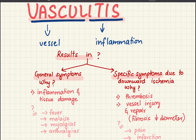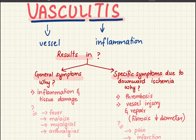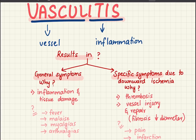Coming to our main topic — vasculitis, plural vasculitides — 'vascul' refers to vessel and '-itis' means inflammation. Vasculitis causes inflammation and the general symptoms to watch for are: fever, malaise (general weakness or fatigue), myalgias (muscle pain), and arthralgias (joint pains). In addition to these general symptoms, there will also be specific symptoms.